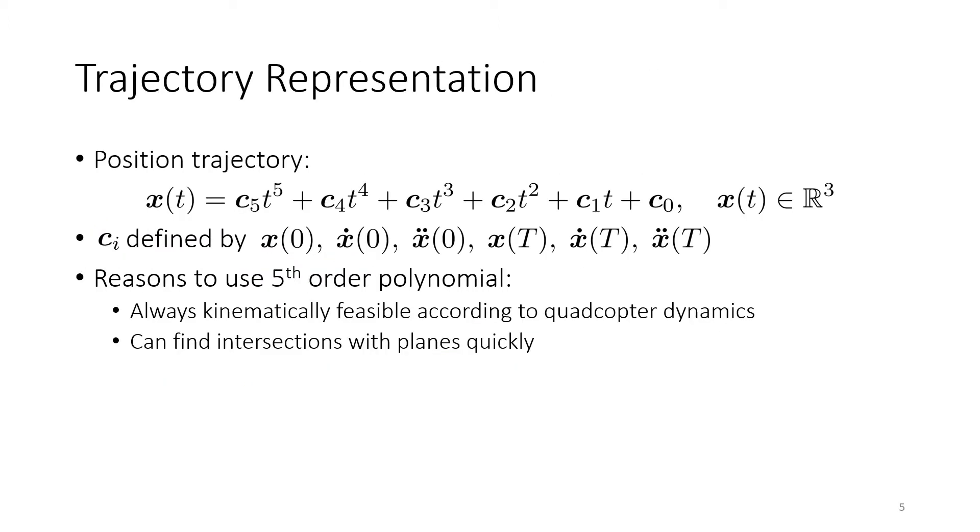We choose to define our candidate trajectories as fifth-order polynomials in time, denoted x of t, where c5 through c0 are just three-dimensional constants defined by the initial position, velocity, and acceleration of the vehicle, as well as the position, velocity, and acceleration of the vehicle at the end of the trajectory, which we denote by time capital T.